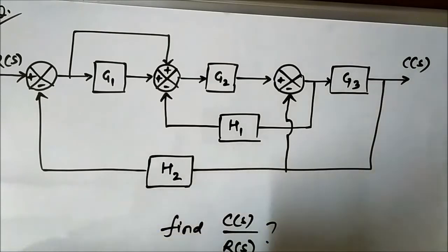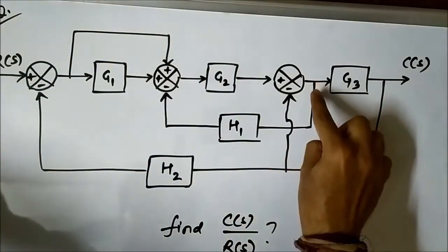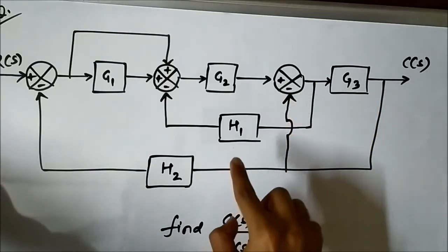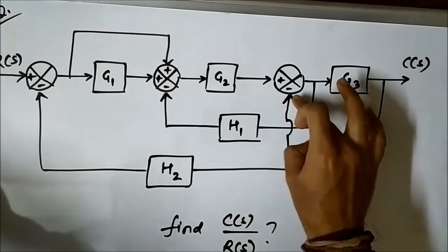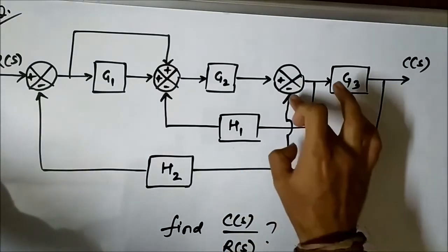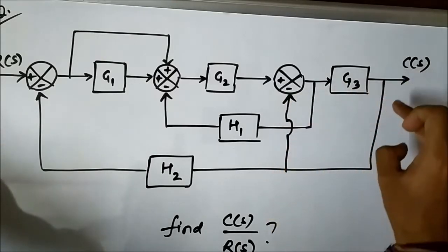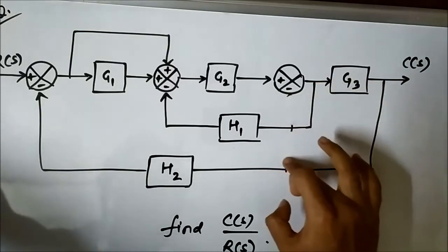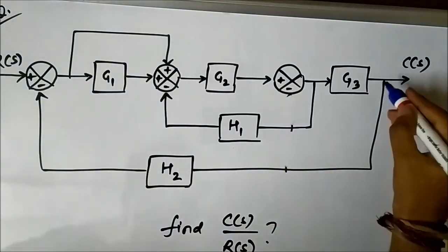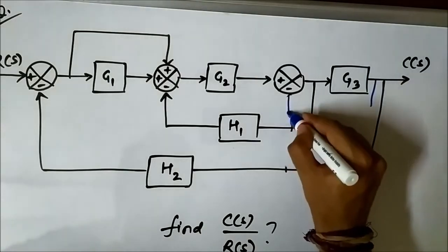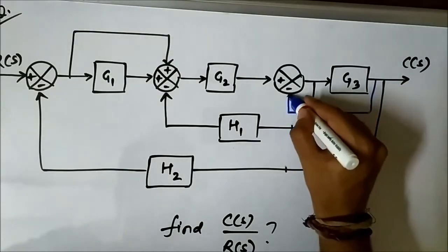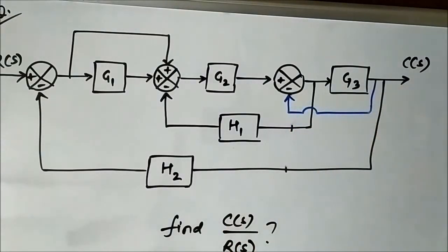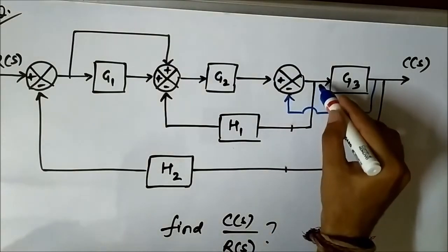Now this connection here is nothing but a unity feedback connection between the output of G3 and this summer. To make it less complicated, we can redraw it — it was connected in a way to look complicated but it is not. This is simply a unity feedback connection.